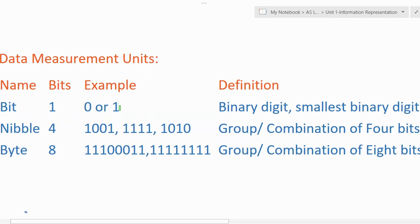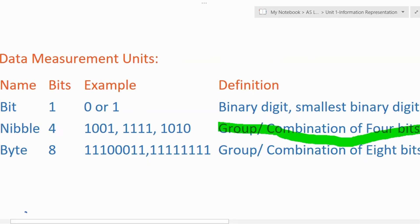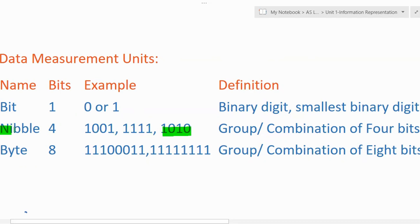A bit can be either a zero or a one. Then comes nibble. A nibble is a combination or group of any four bits. For example: 1111, or 1010 — any combination of four bits is known as a nibble.